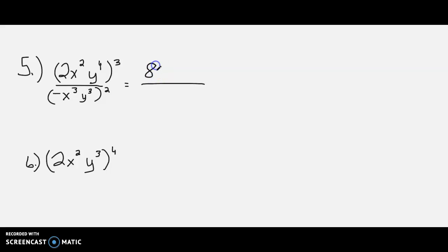2 to the 3rd is 8. x squared to the 3rd becomes x to the 6th, because you multiply the exponents when you're taking a power of a power. And then we'll have y to the 12th to finish off the numerator.